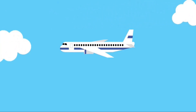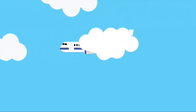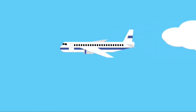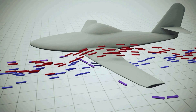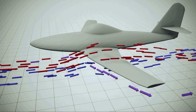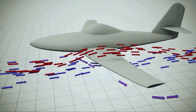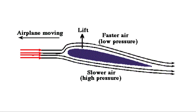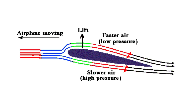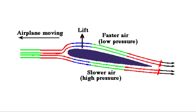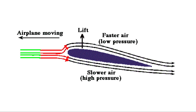Consider an airplane flying with some velocity V. As the airplane moves forward, air particles pass over the upper and lower surfaces of the wing. Now consider an airfoil section of this wing. As the airplane moves forward, these air particles move around the smooth, streamline-shaped airfoils of the wing.